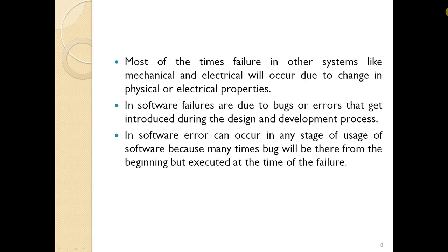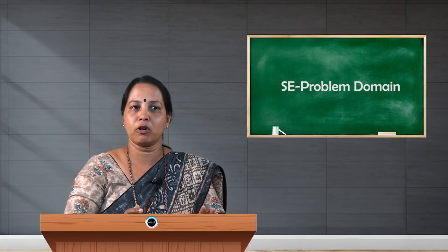Most of the time, failures in other systems like mechanical and electrical occur due to changes in physical and electrical properties. But failures in software are due to bugs, not because of aging. There is no problem of aging in software — the problem is with the bugs or errors that are introduced during development itself but may occur at any time. Software errors can occur at any stage of usage because many times a bug will be present from the beginning but only triggered at the time of the failure.